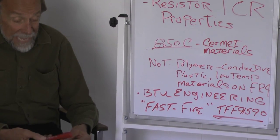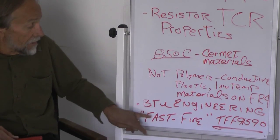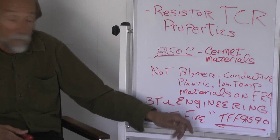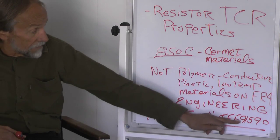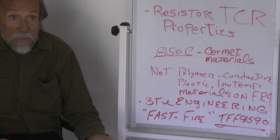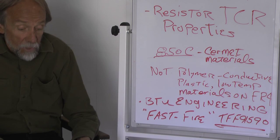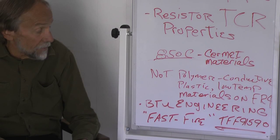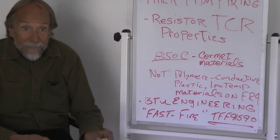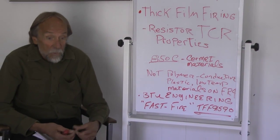In furnaces like the BTU engineering fast fire model. For example, the BTU engineering fast fire model TFF 91-590 has been and I believe still is probably the world's most popular furnace in terms of units in production around the world right now. That furnace fires more thick film than anybody else's furnace and that's the one that John has.